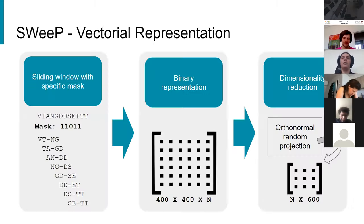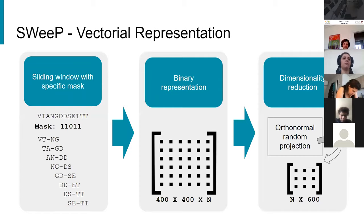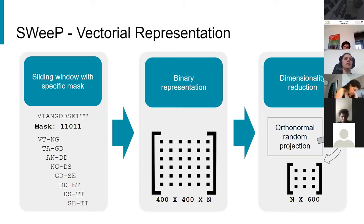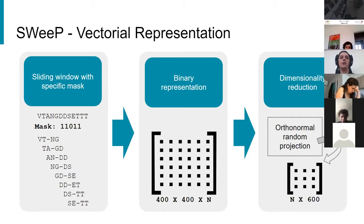I created a scheme just to explain how the tool works. It is a vectorial representation of the data. We firstly take all the sequences presented to the software. They are aligned with a mask of a given size. This example uses a mask of ones — one-one-one-one-one-one-one-one — where the ones represent the amino acid or nucleotides that will be used by the tool, and zero represents the amino acid we will ignore as a gap. Then we apply this sliding window to all the sequences.